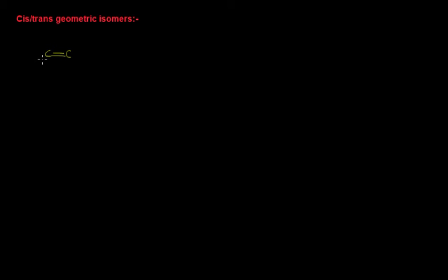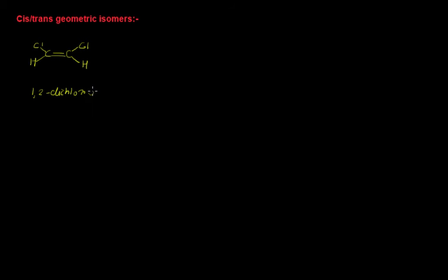These are cis as well as trans. Let me write the examples. If you have the substituents chlorine and hydrogen on each carbon of the double bond, we have two carbon atoms with a double bond between them — it is an alkene. We can give the name to this compound: 1,2-dichloroethene.